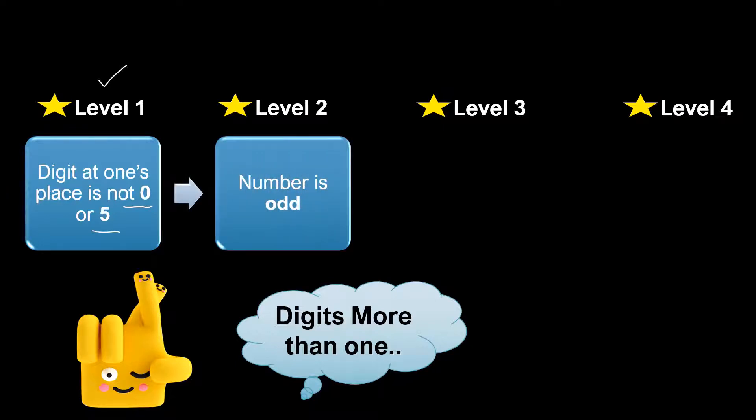Level two: we have to check whether the number is even or odd. An odd number will clear this level and move to the next level.